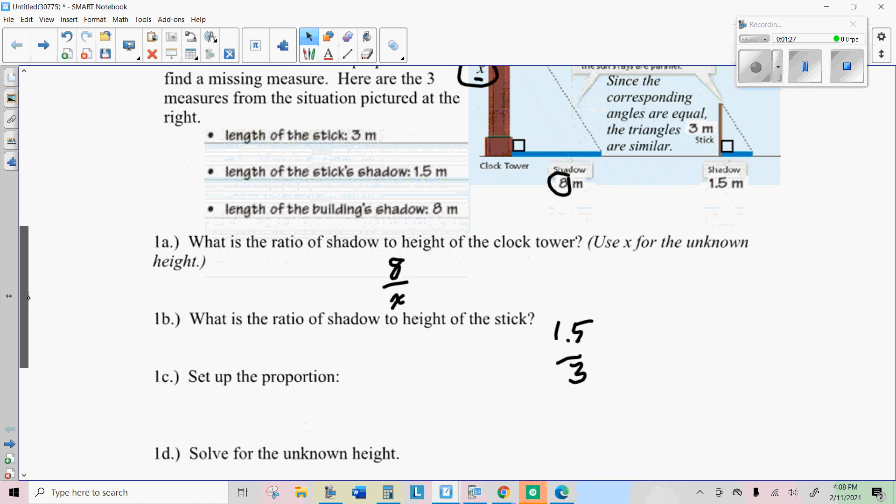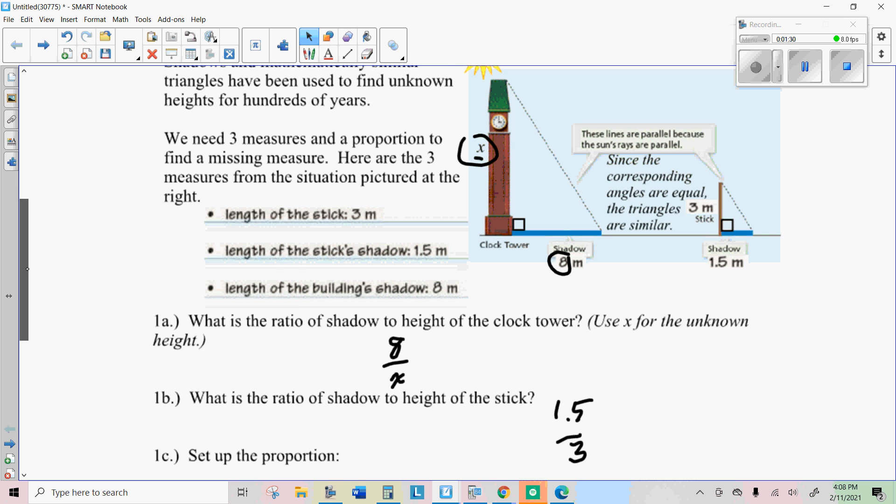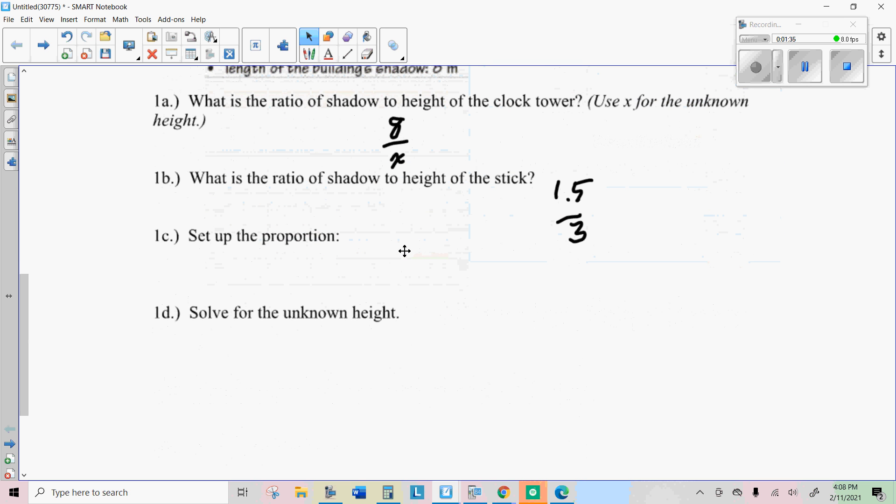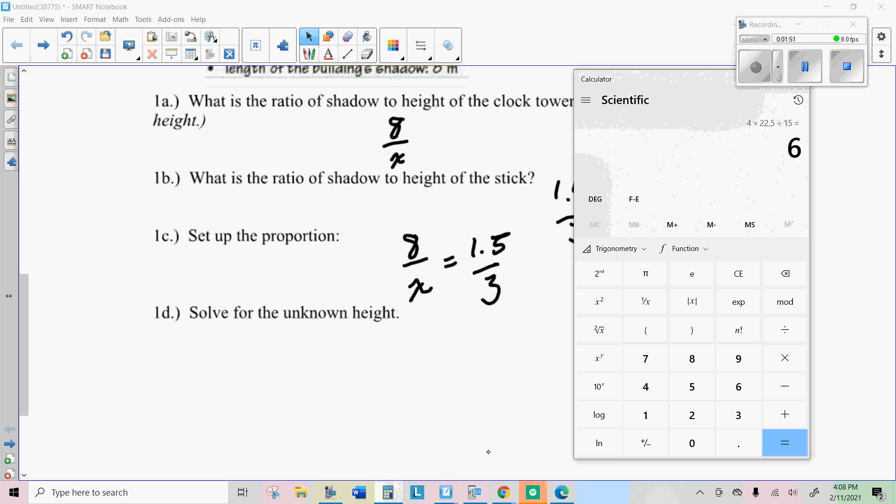Now, since the sun's angle is the same on both those and they're both right triangles, those are similar triangles. So we can solve a proportion to get this missing height X. So we're going to take eight times three, that's one point five by the way. We're going to take eight times three, which is twenty four. And then we're going to divide that by one point five. And we end up with 16.